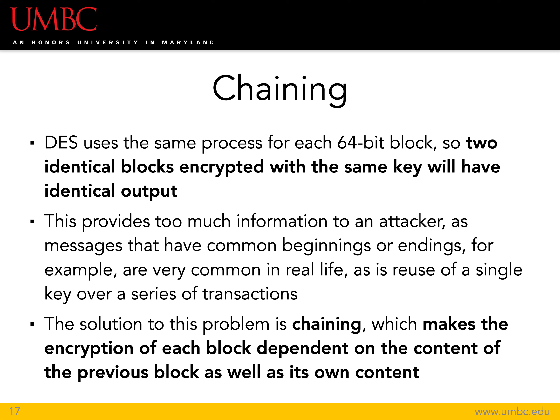The solution is chaining. You really want to make the encryption of each block dependent upon the content of the previous block, as well as its own content. You might notice that this makes diffusion — one of those characteristics we were talking about earlier about modern crypto systems — more possible. So I'm going to give you an example of why chaining is problematic first, and then we'll show a little bit of a solution to that.